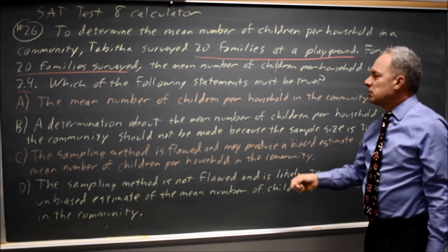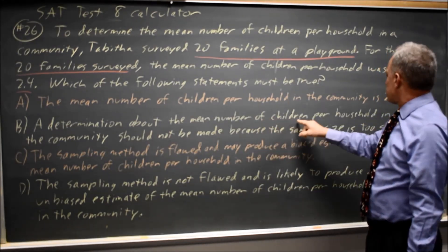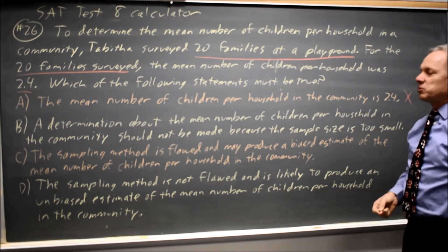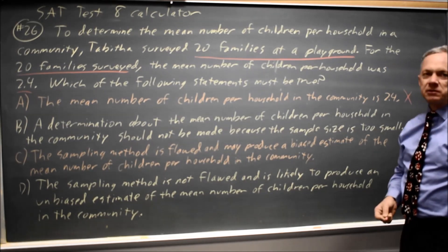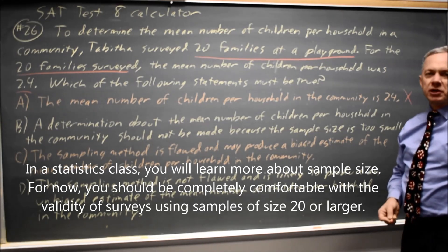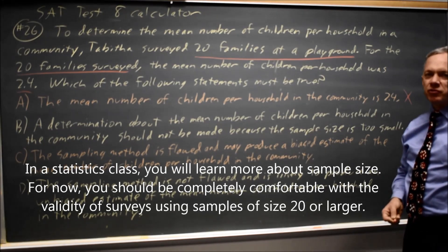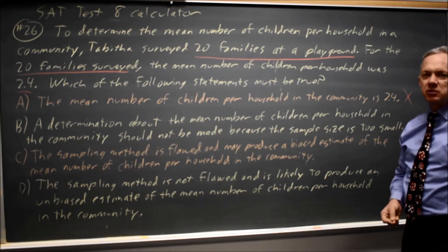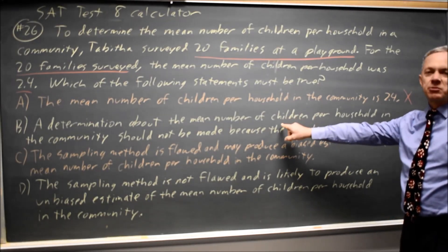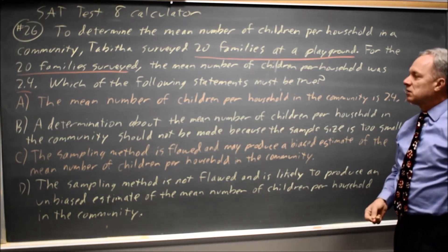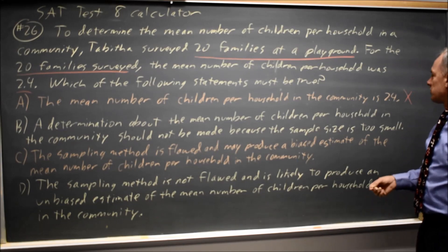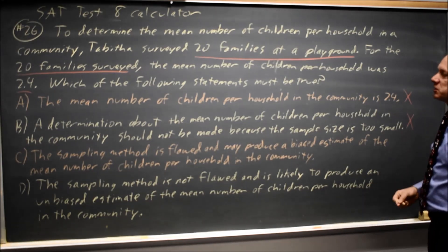What about choice B? A determination about the mean number of children per household in the community should not be made because the sample size is too small. Generally, sample sizes of 20 are sufficient for most purposes and certainly for most purposes on an SAT question. The AP exam in statistics may have more sophisticated questions where a sample size of 20 is not sufficient, but that's certainly not an issue for any SAT question.